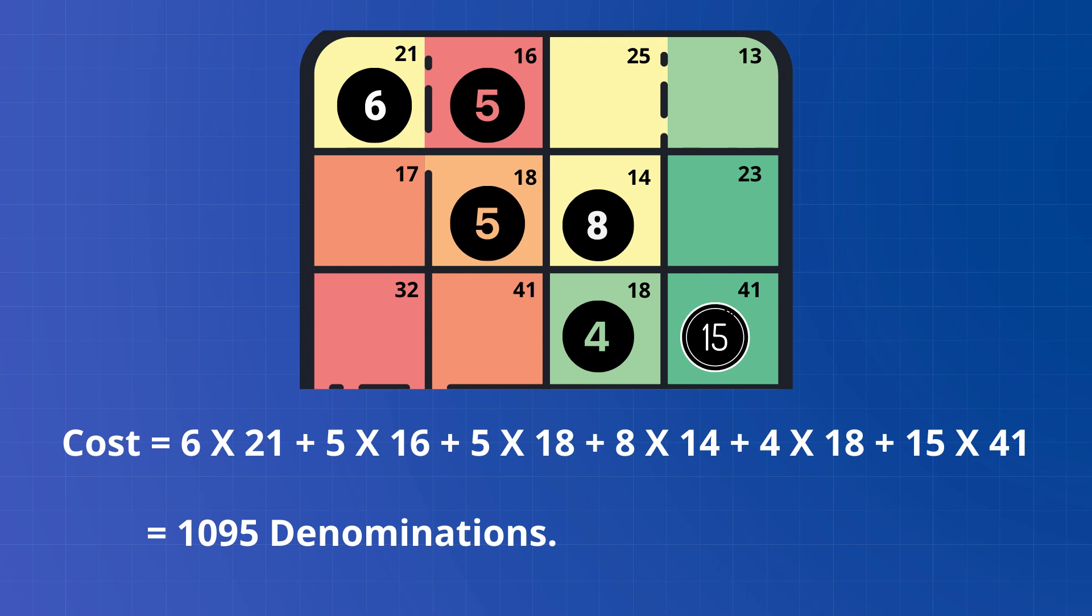Now let's cross check the number of allocations made are correct or not. So here m plus n minus 1 is 4 plus 3 minus 1, that is 6. So allocations are made correctly. Therefore, it's a basic feasible solution.